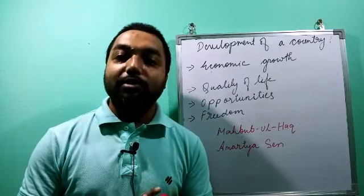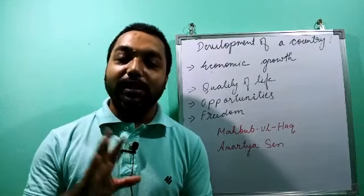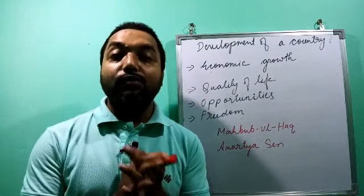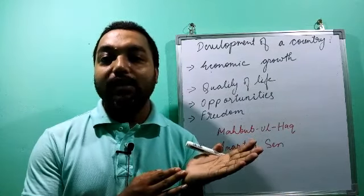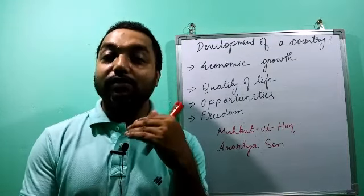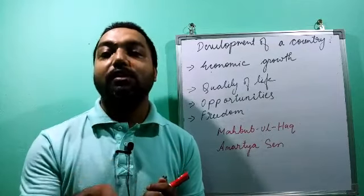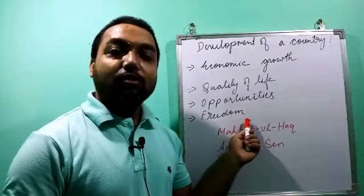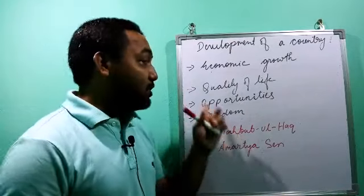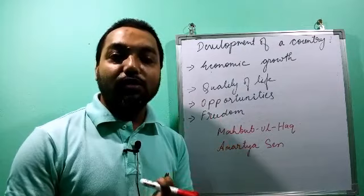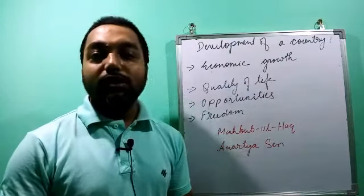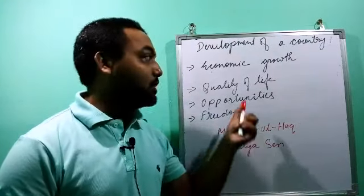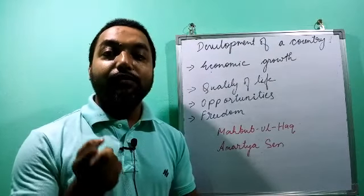Third is freedom — how much freedom people have in making decisions. Their decisions should not be influenced or compelled by someone else. They should be free to take any decision without compulsion from the government side — freedom of speech and freedom in every sector. These three things — quality of life, opportunities, and freedom — indicate the development of a country. This concept was introduced by two South Asian economists: Mahbub ul Haq and Amartya Sen.